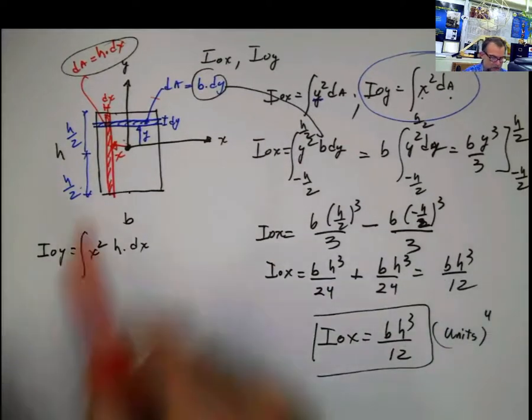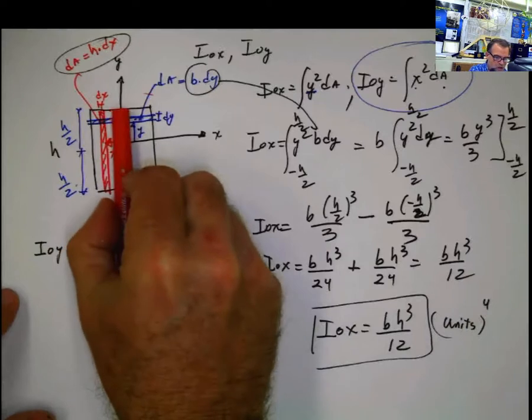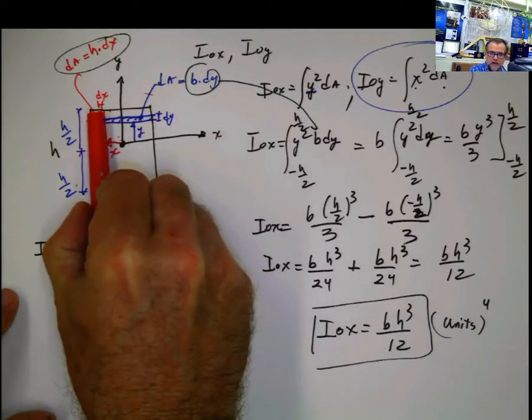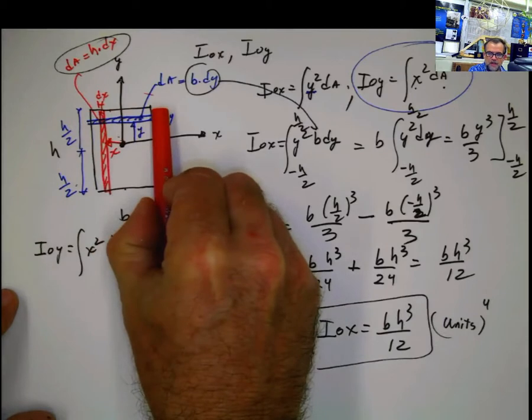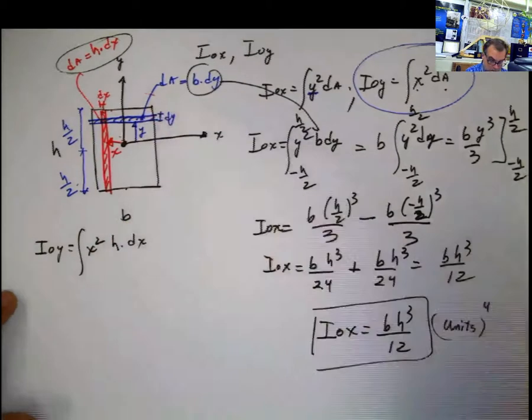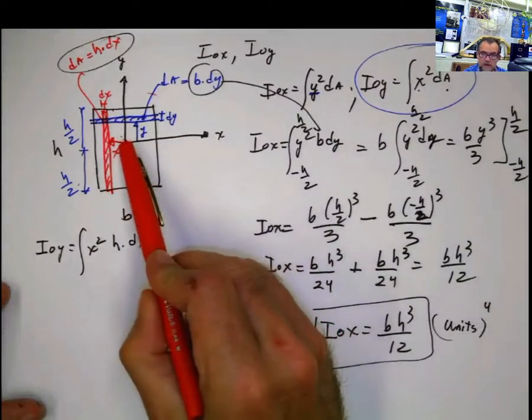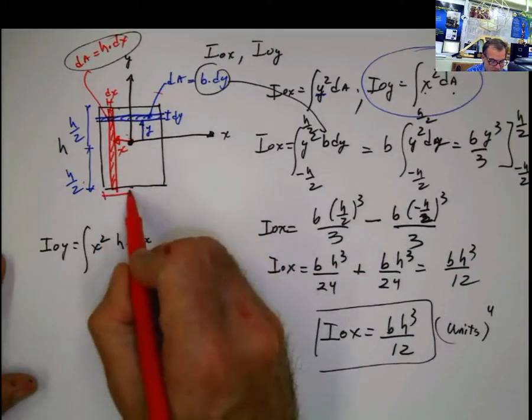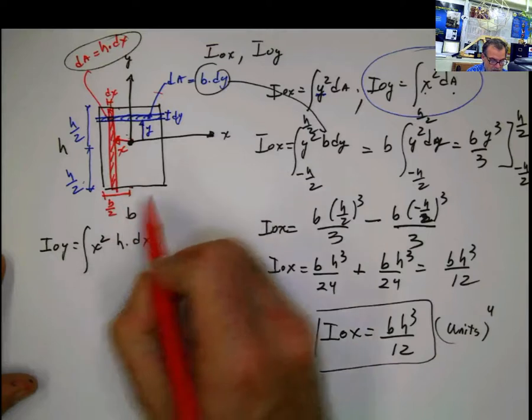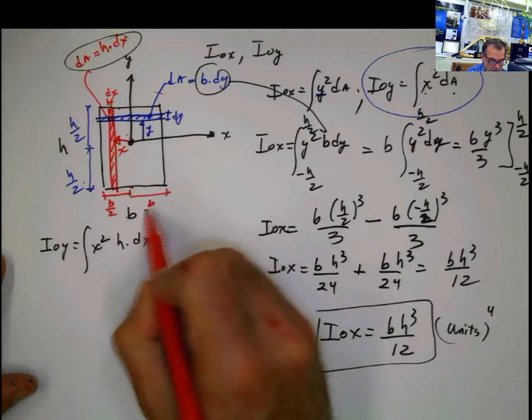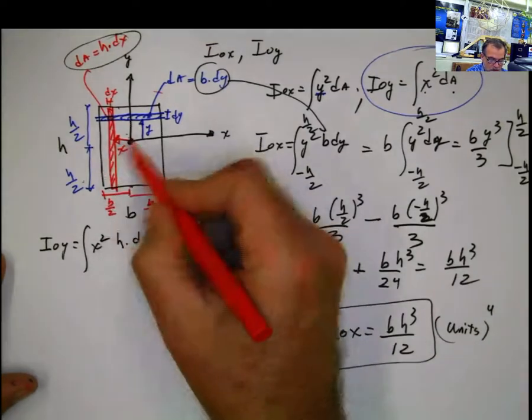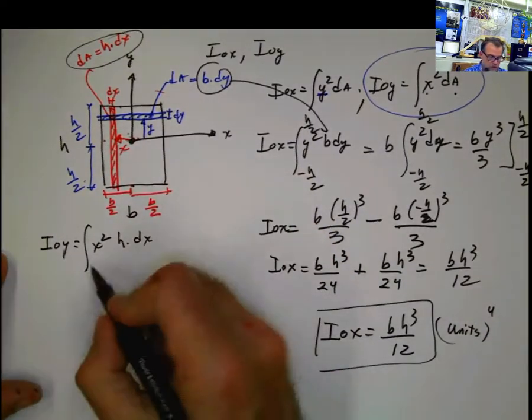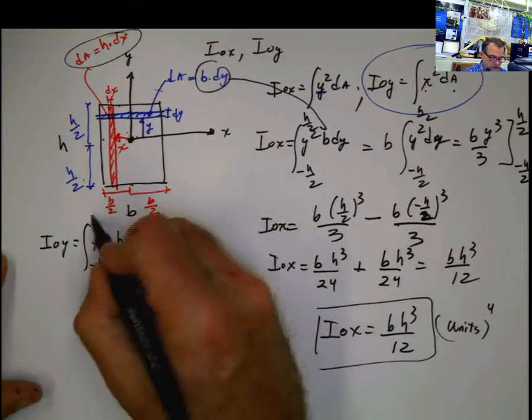Same explanation as before. What I'm doing is just sweeping the whole section from this end to this end with my differential of area. And my center is here, because it's referred to the centroid. And this is b, and the centroid is located at the distance of b divided by 2 and b divided by 2. If I go to the left, from the 0 to the left, this is going to be negative b divided by 2 to b divided by 2.